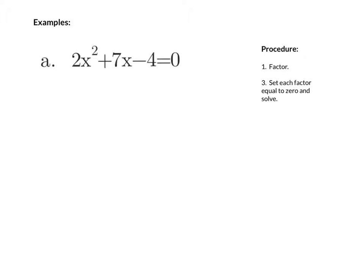Let's get into some examples. We have 2x squared plus 7x minus 4. Our first step is to factor this. My firsts — 2x squared — that's going to be 2x and x. My lasts are going to be 1 and 4. We can't go with 2 and 2 because one would have to be with the 2x, and you cannot have the same factors in the same set. So we go with 1 and 4; 4 goes in the second set and 1 goes in the first. We have different signs, so I'll make my 4 positive and my 1 negative.